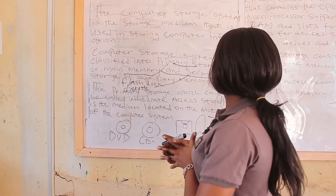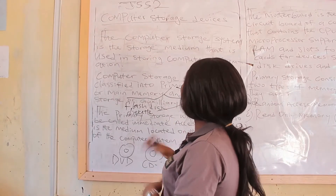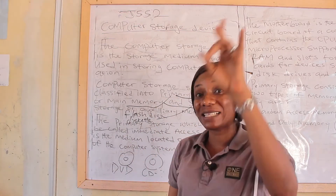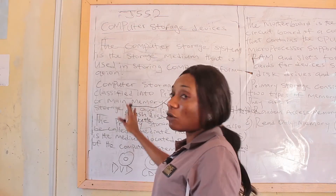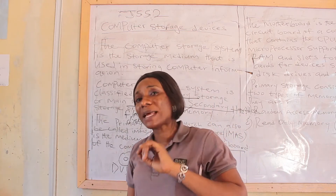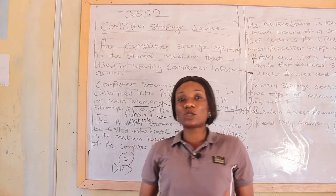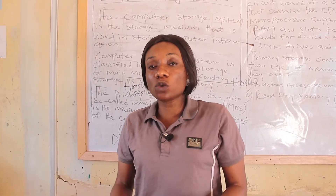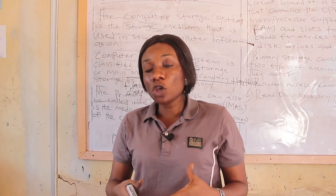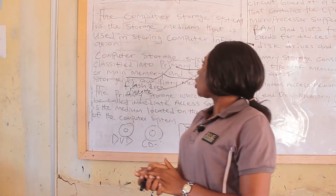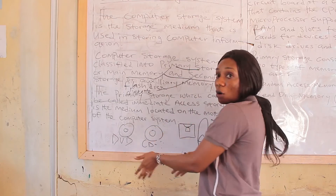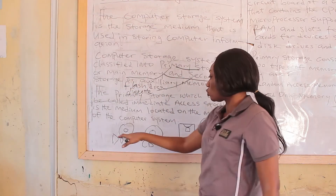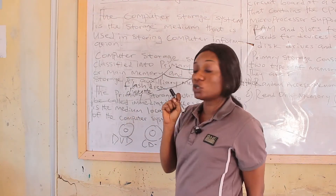To refresh your memory: the computer storage system or device is the storage medium that is used in storing computer information. It is necessary to store your information so that you don't lose it. Before you carry out your work or enter your data, first save your work environment. As you do your work, also save, so that in case there is power failure you will not lose the information totally. You also save on auxiliary storage devices so that in case the computer crashes, you can go back to those devices to retrieve the information you have saved.